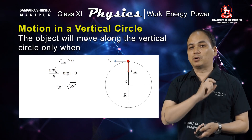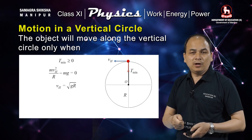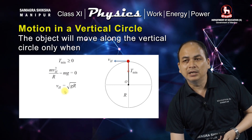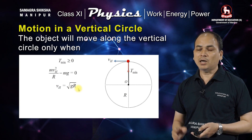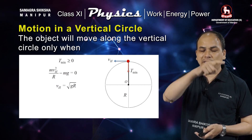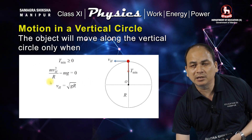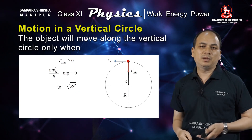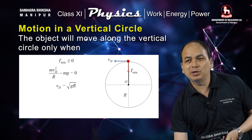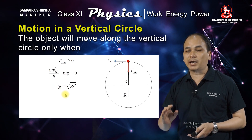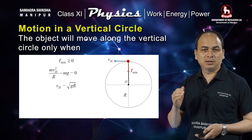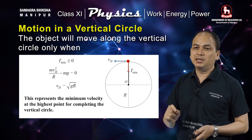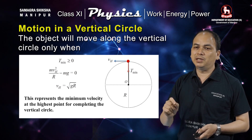This velocity is very important. If this velocity at the highest point falls below √(gr), the string becomes slack and the object cannot complete the vertical circle. So √(gr) represents the minimum velocity at the highest point for completing the vertical circle.